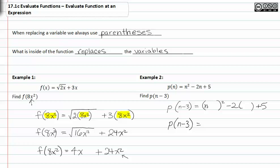So (n-3)² minus 2 times (n-3) plus 5. Foiling n minus three I get n² minus 6n plus 9 minus 2n plus 6 plus 5.